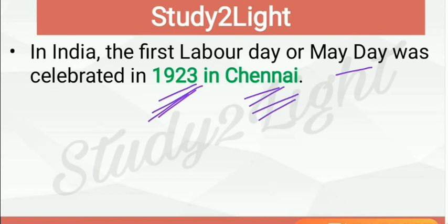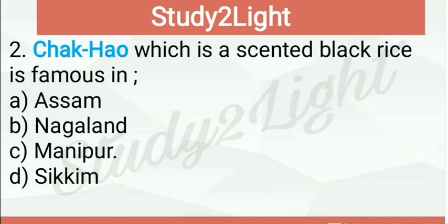The day was chosen to commemorate the Haymarket Affair which occurred in Chicago in 1886, where workers rose against exploitation. The day marks a victory of the workers' movement for 8 hours of work — that is why today we work only 8 hours in any public or private enterprise. In India, the first Labor Day or May Day was celebrated in 1923 in Chennai.